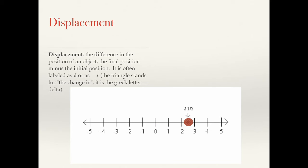Now, displacement. Very related to position, but not equivalent to position. It is the difference in positions of two objects. The final position minus the initial position is how it's defined mathematically. Now we label that usually with a D or this triangle X.